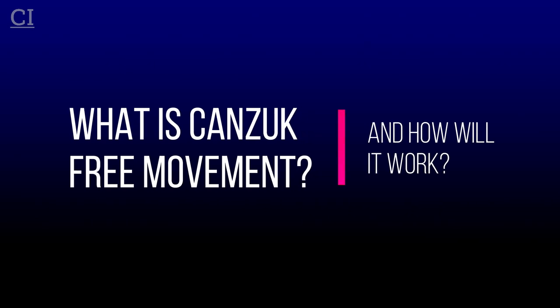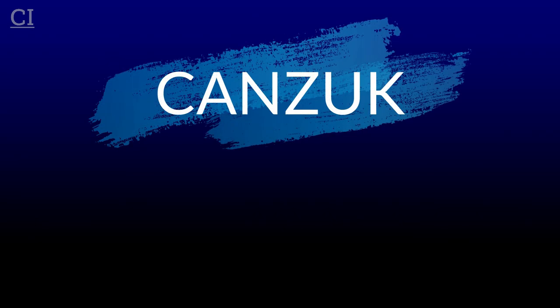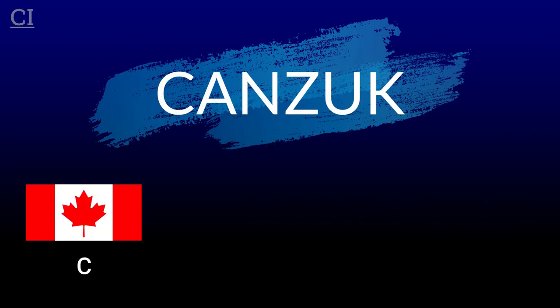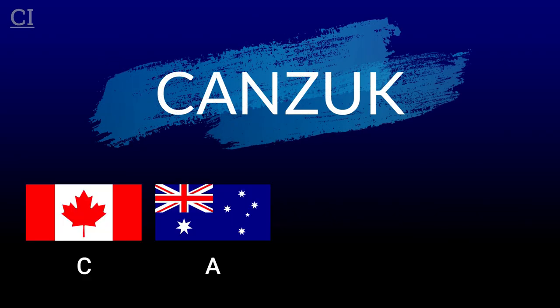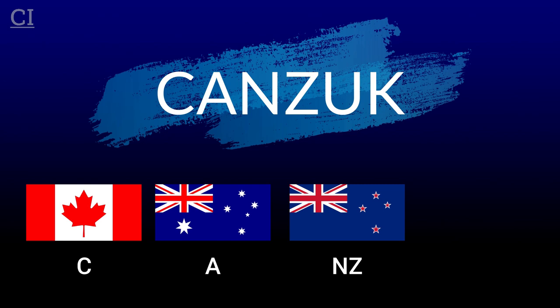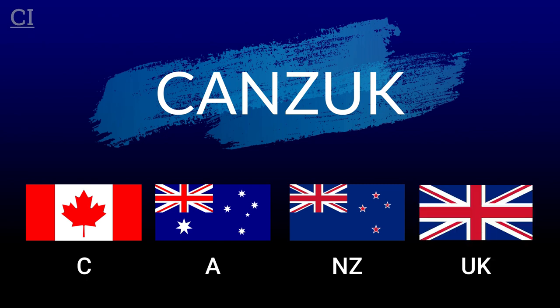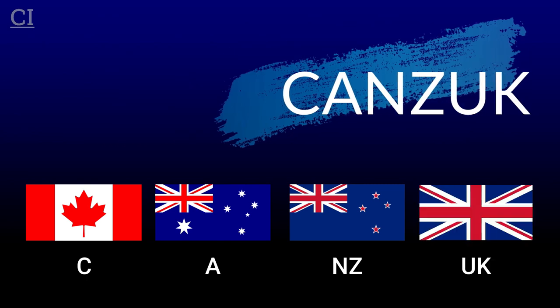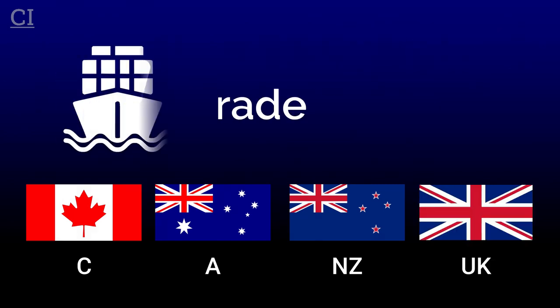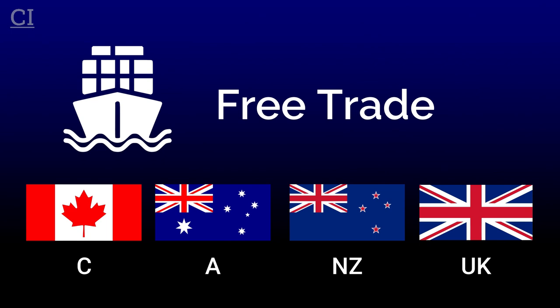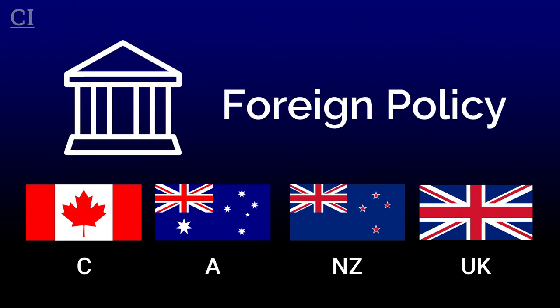What is CANZUK freedom of movement and how will it work in practice? CANZUK is an abbreviation of Canada, Australia, New Zealand and the United Kingdom, with the aim of achieving free movement, free trade and foreign policy cooperation between these countries.